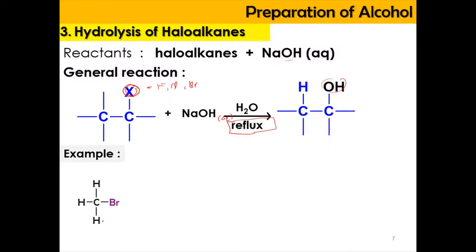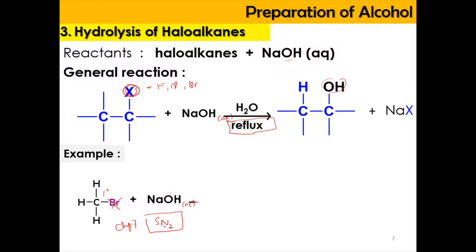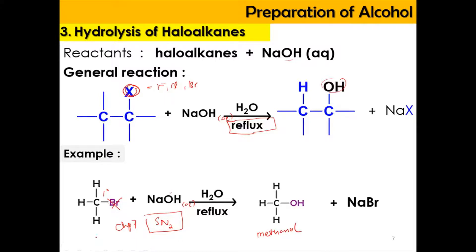For example, bromomethane reacted with aqueous NaOH causes OH to replace the Br. This happens via SN2 mechanism, as learned in the chapter of haloalkane. This is a primary haloalkane, so OH attacks from the backside, forming a transition state, and Br is kicked out as a leaving group with inversion of configuration. Water and reflux conditions are required, and OH is inserted to produce methanol, with NaBr as byproduct.